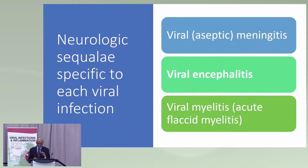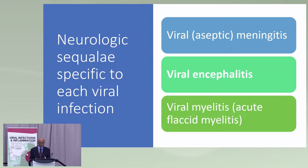What about specific infections or sequelae associated with each infection? Some viruses cause predominantly meningitis — we call it aseptic meningitis, meaning you can't culture bacteria from it. Some cause encephalitis, others myelitis. If it's a viral myelitis, it will affect the anterior horn cells and you end up with a flaccid myelitis, while immune-mediated myelitis often affects the white matter tracts.